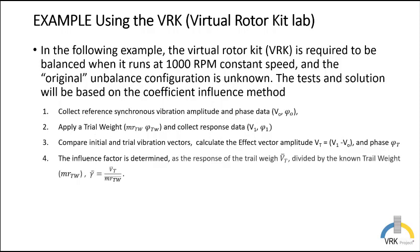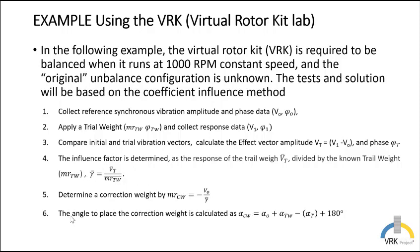The influence factor is determined as the response of the trail weight we calculated in the previous step divided by the trail weight. So this is the formula for the influence factor. Then we can calculate the correction weight which will be the initial response divided by the influence factor. We also have to calculate the angle where the correction weight has to be placed.